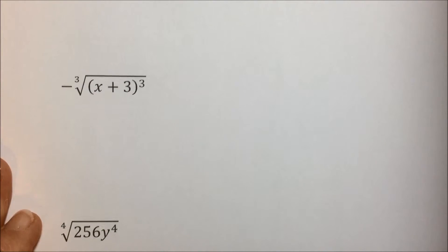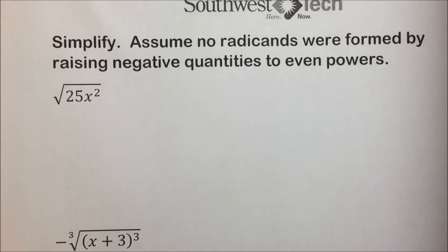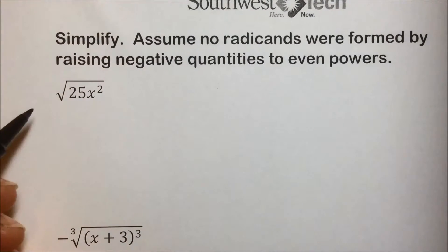If it is 2, we don't write any index there. It's understood that it is an index of 2, or what we refer to as a square root.